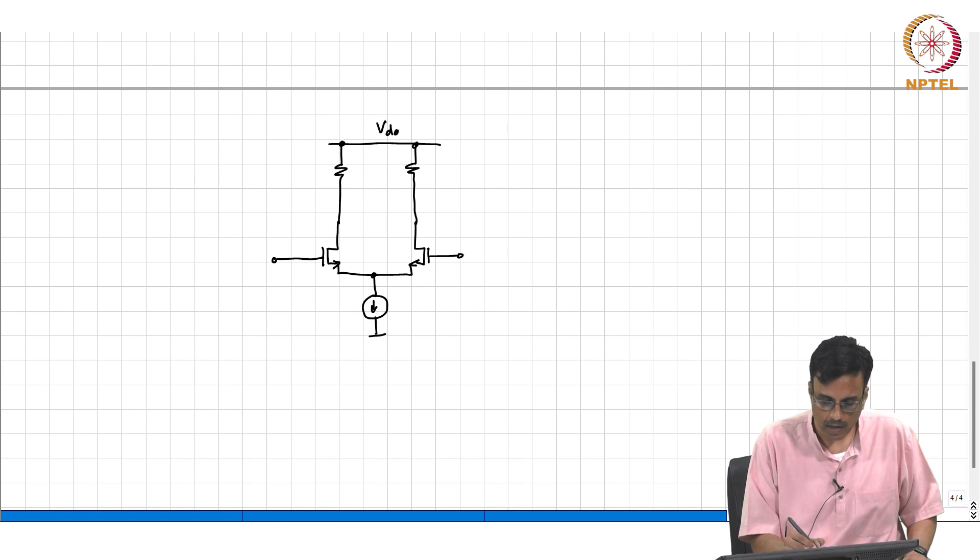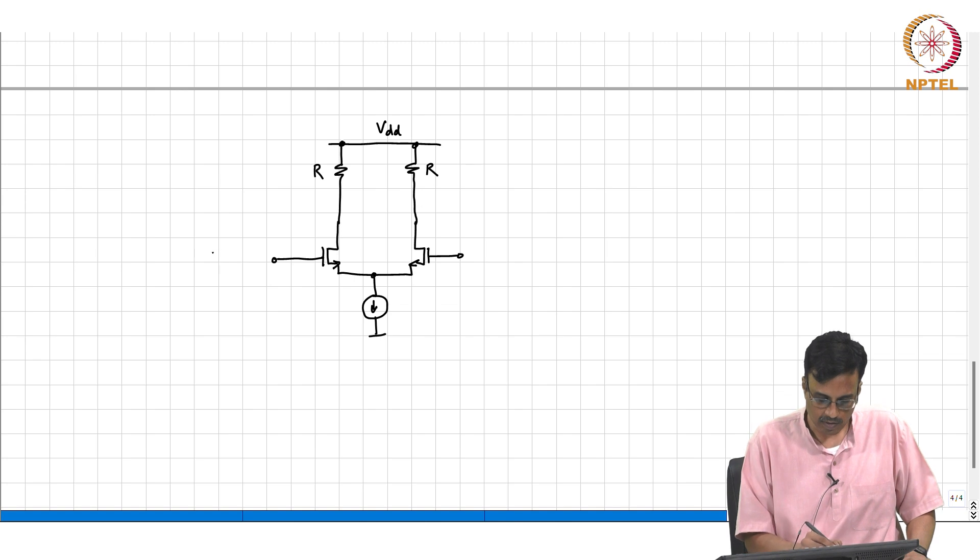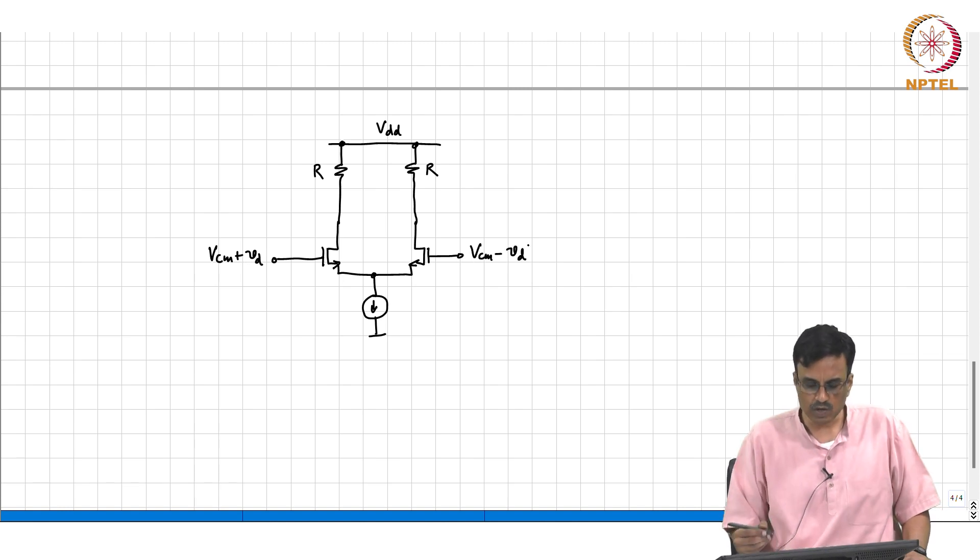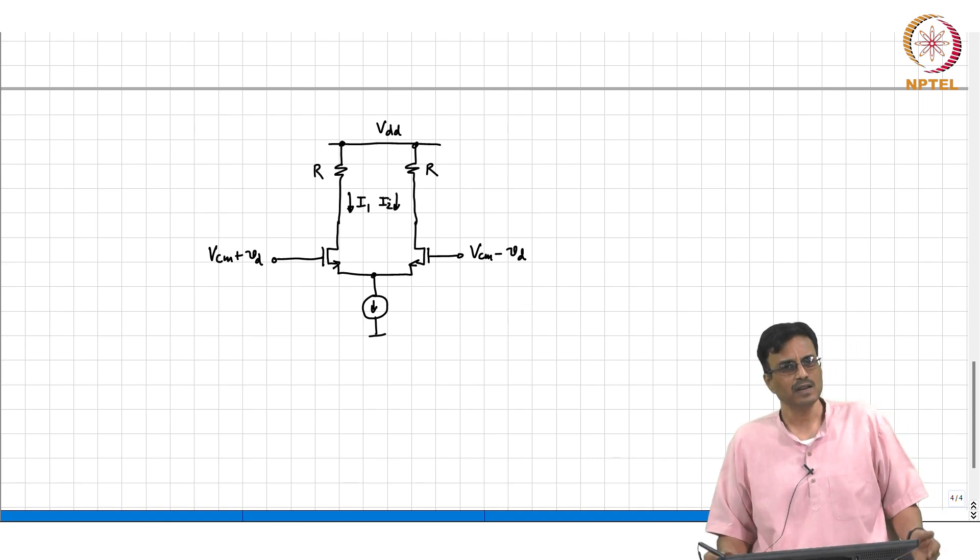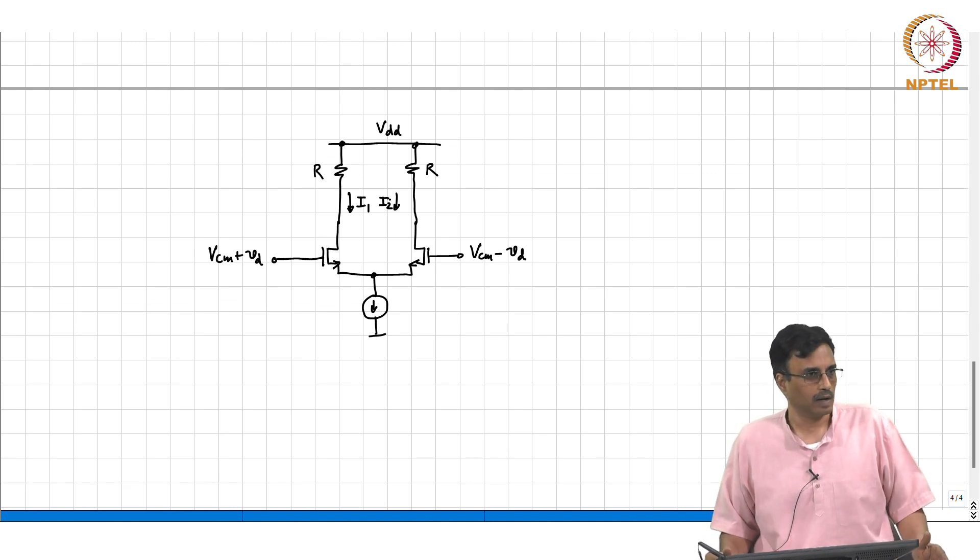This is Vdd, this is R, this is R. This is Vcm plus Vd, this is Vcm minus Vd.